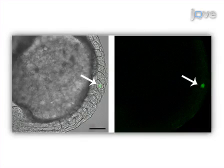Ultimately, this method can be used to determine the lineage contribution and tissue localization of the photoactivated single cells. The main advantage of this technique over existing methods, such as standard fluorescence microscopy, is that it can be used to differentially label single cells for fate mapping.